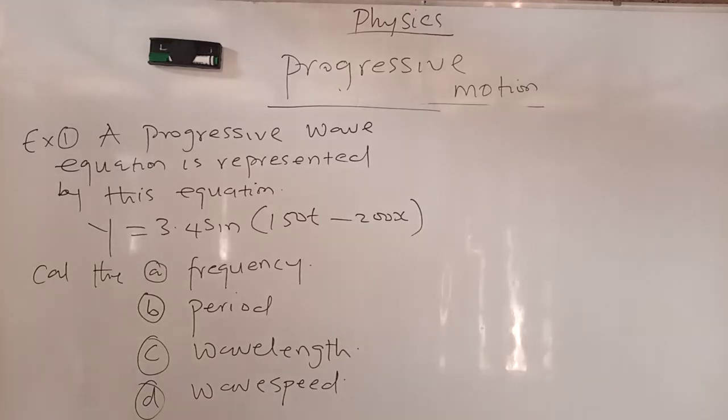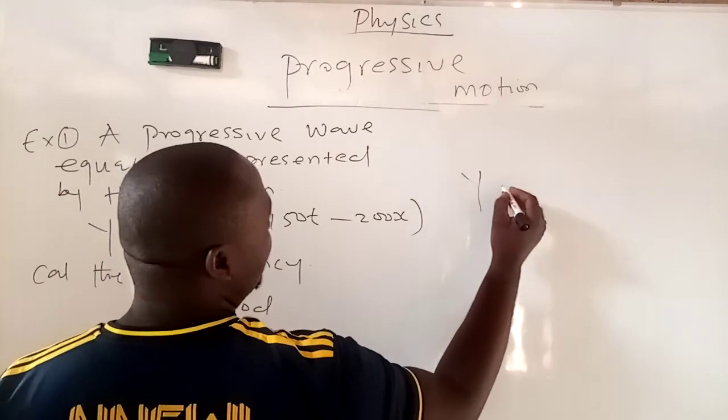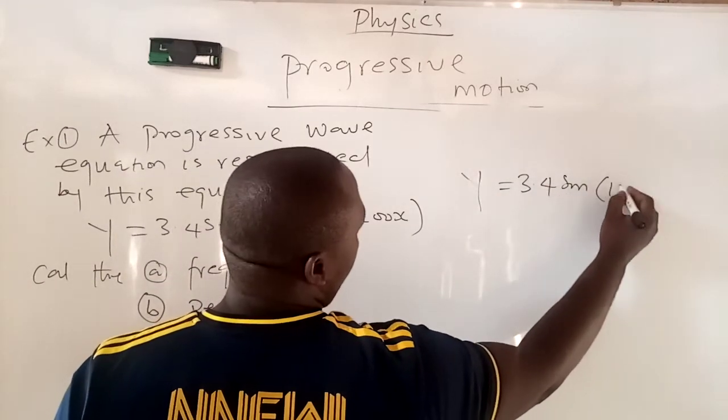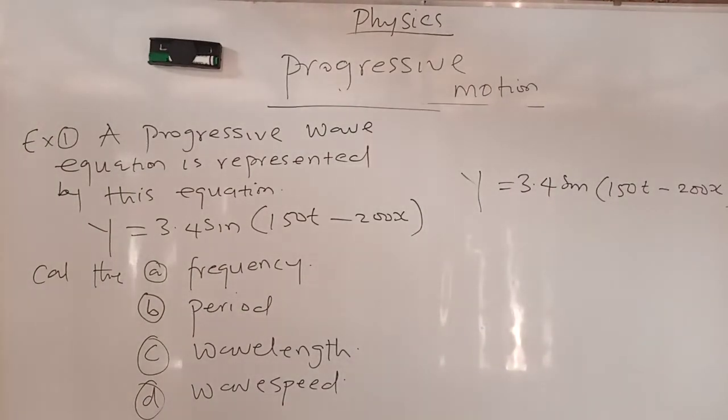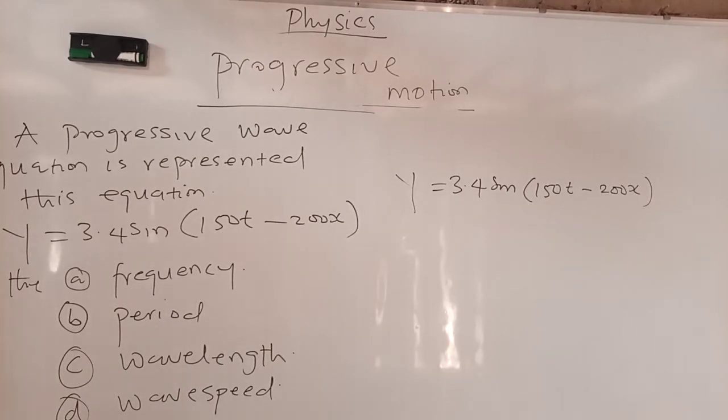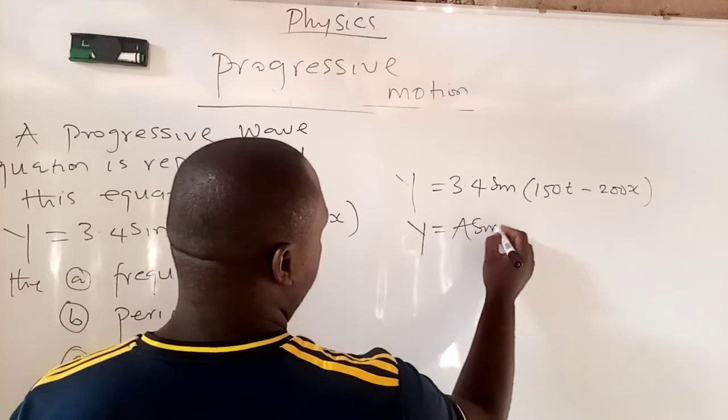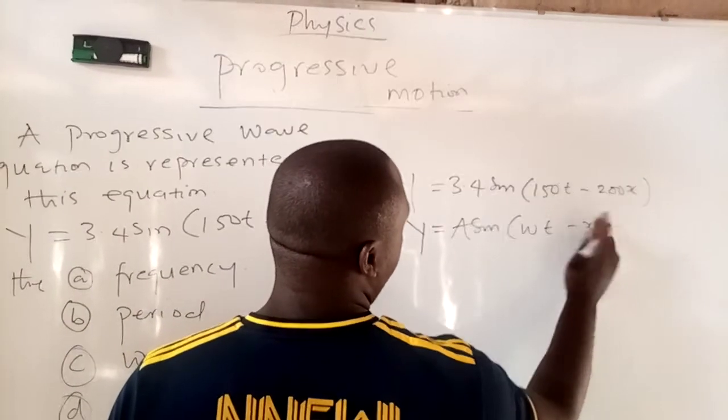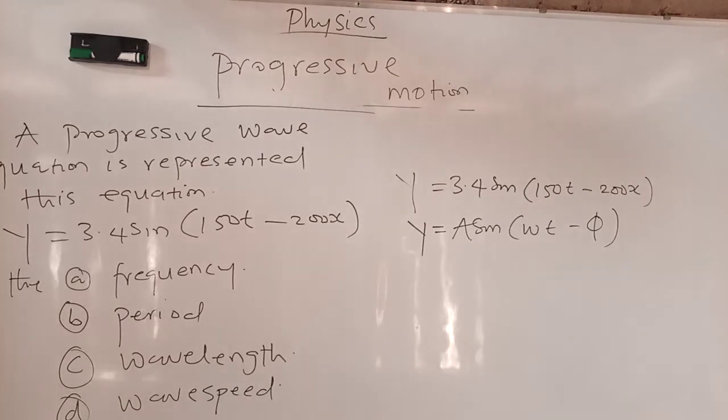You have this equation. And for you to solve it, they have given you already how the equation is. So all you need to do right now, this is the equation: Y equals 3.4 sine of 150T minus 200X. What we are going to do for part 2, we introduced a formula for solving it. We introduced a formula before in part 1, that A sine omega T minus a phase angle. All you need to do is compare. Answer will start flowing naturally.